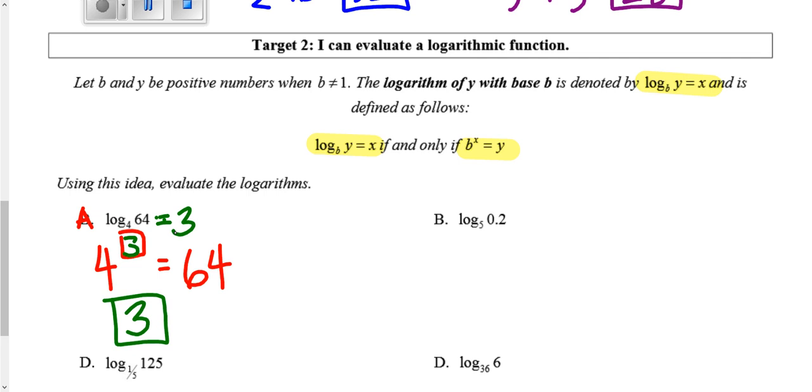On B, we have log base 5 of 0.2, which means 5 to what power equals 0.2? A hint: 0.2 as a fraction is 1/5. So what exponent would change 5 into 1/5? As we discussed above, a negative exponent, specifically -1, takes the reciprocal of our number. So the missing exponent is -1.